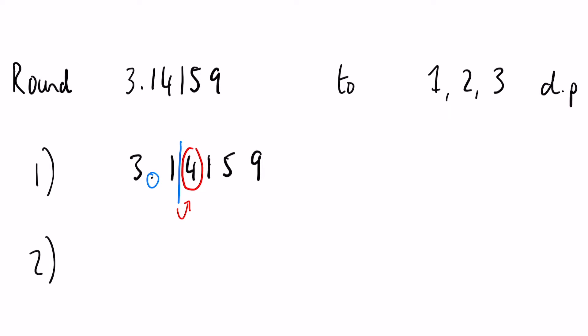However, 4 is not any higher than 5, so that means the 1 stays the same. So our number is 3.1 to 1 decimal place.